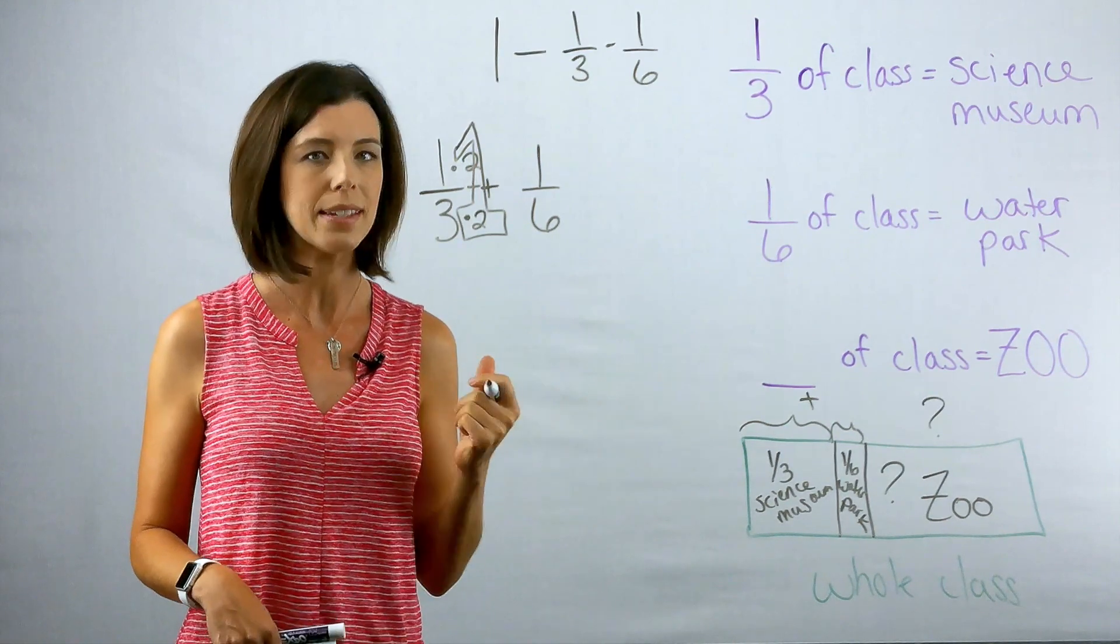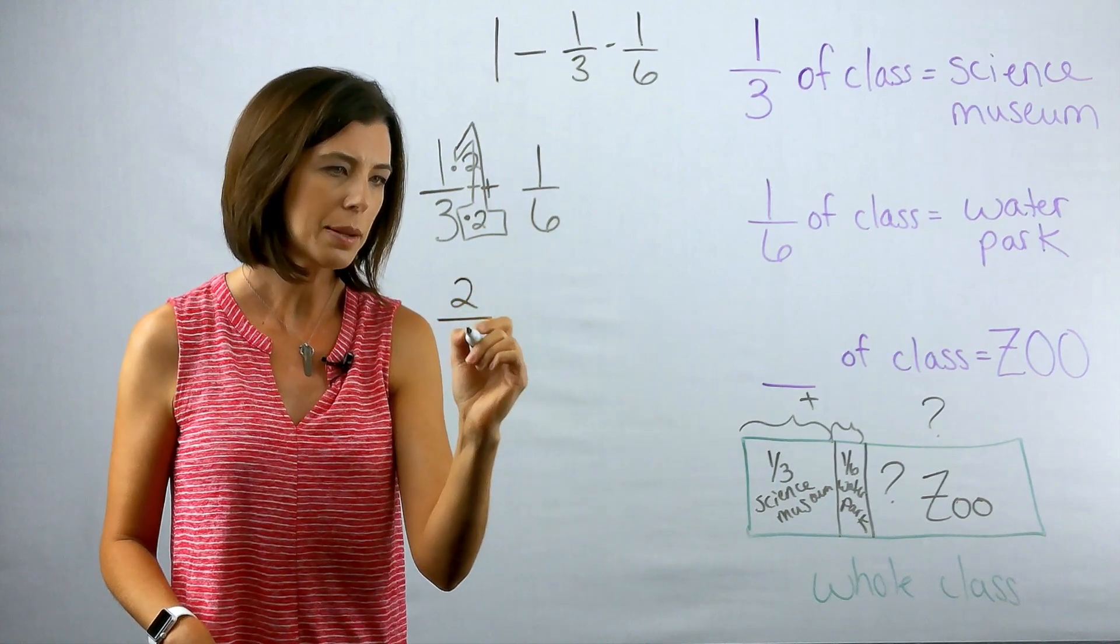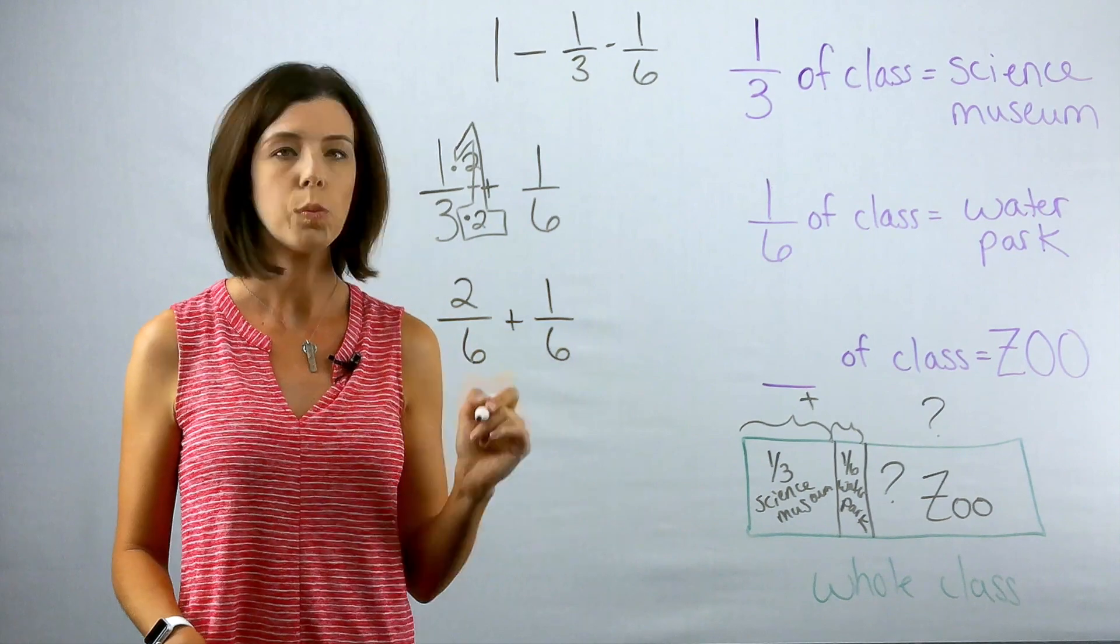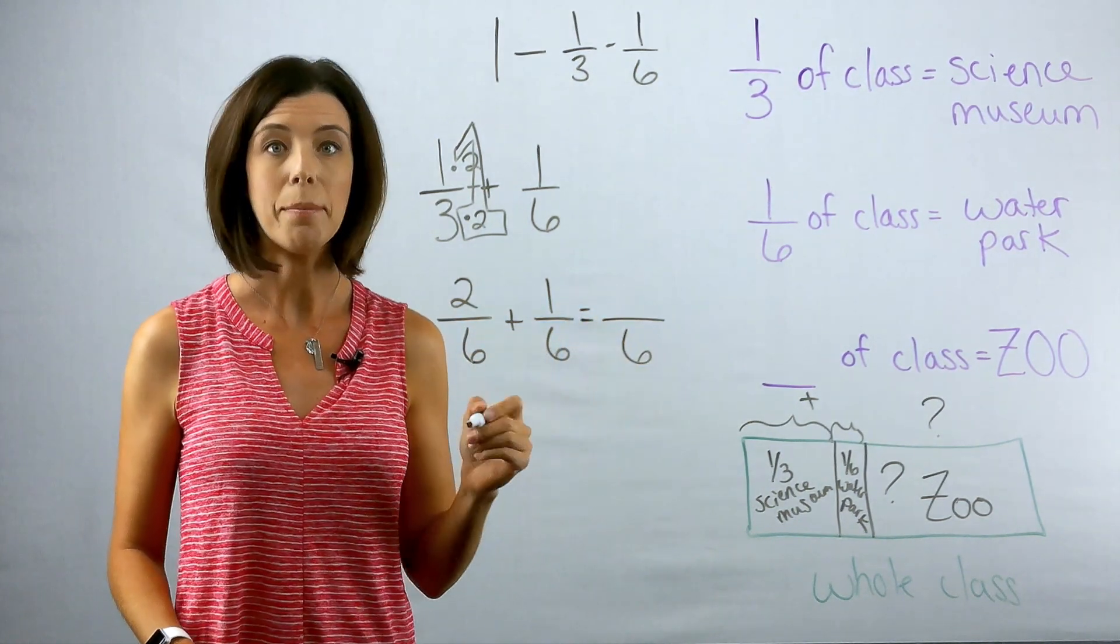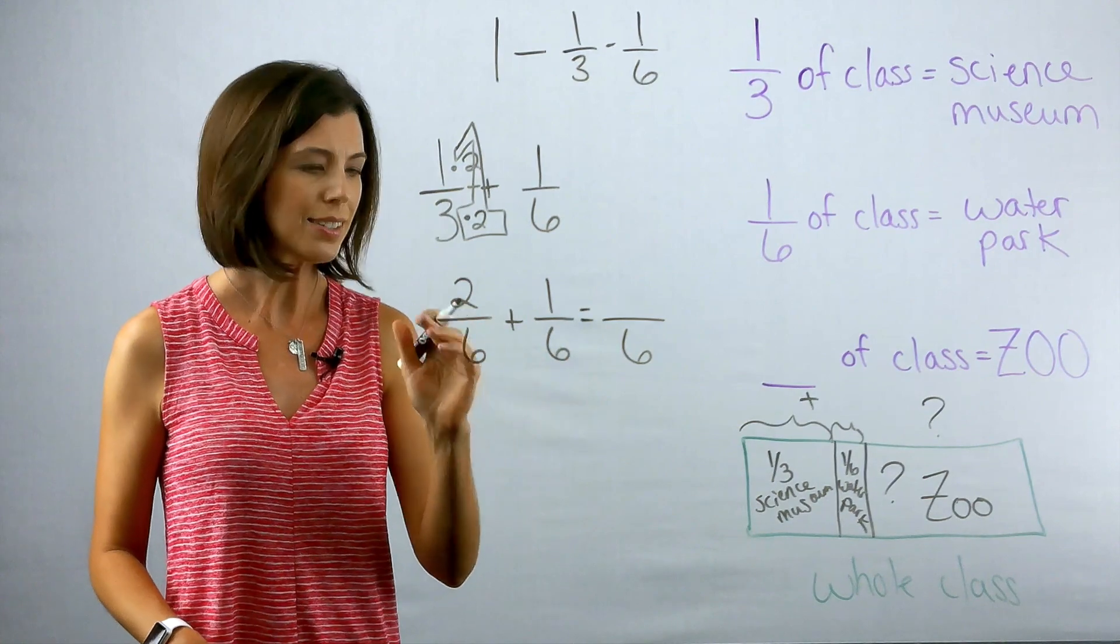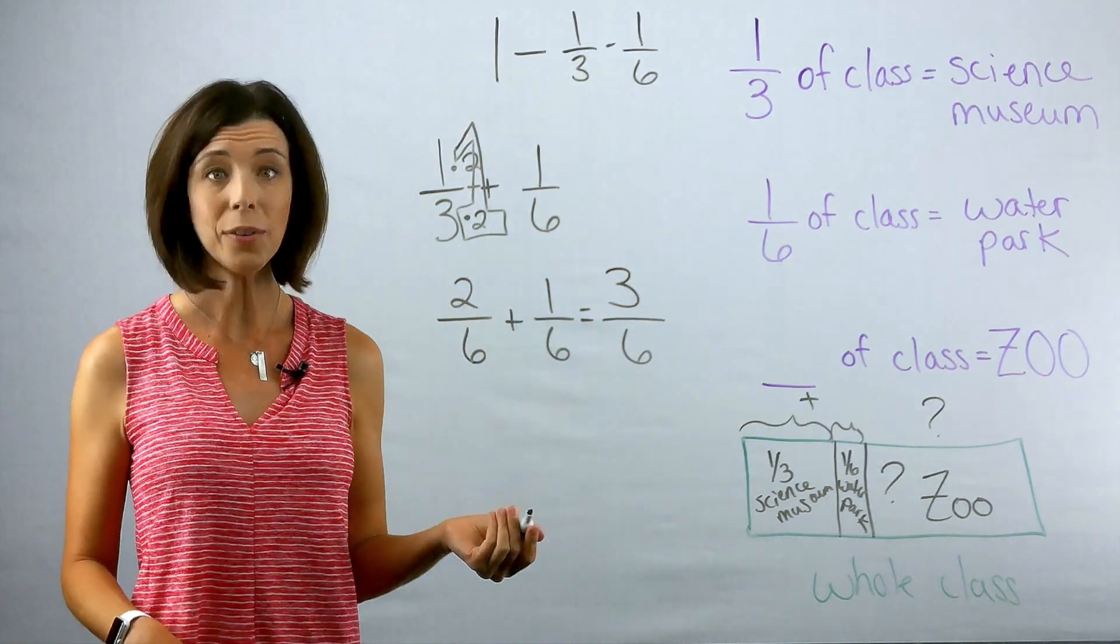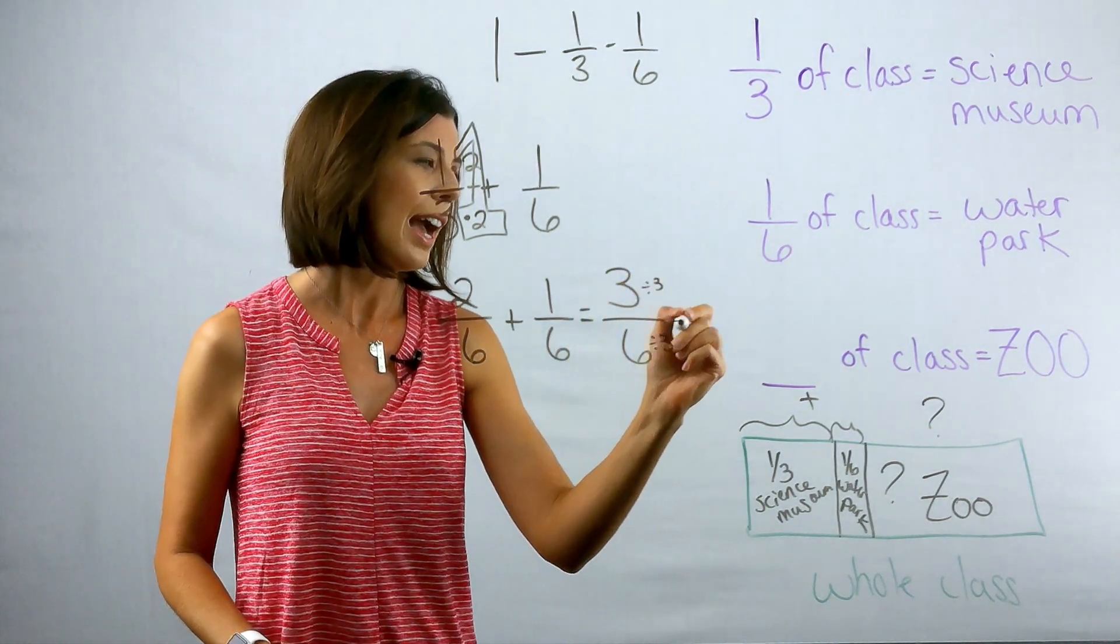You're in essence just cutting those pieces into smaller pieces. So one times two is two. Three times two is six. So now I have two-sixths plus one-sixths. I can keep my denominators the same because I know that I'm adding copies of a sixth right now. Two plus one is three. So I have three-sixths. I can go ahead and reduce this. I know that I can divide both of these by three and get one-half.